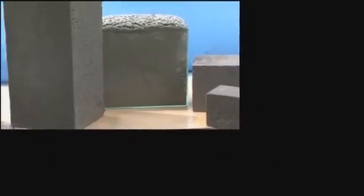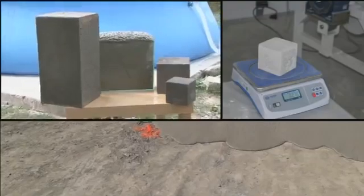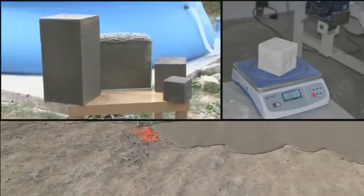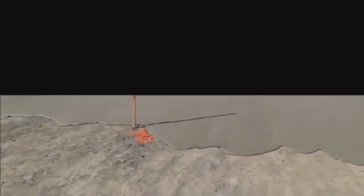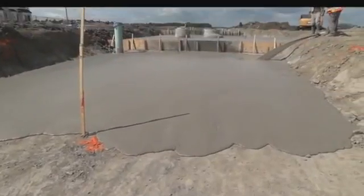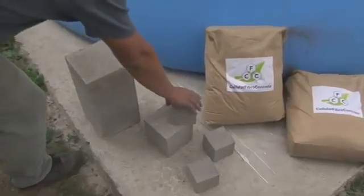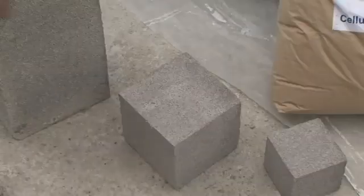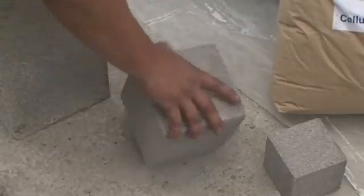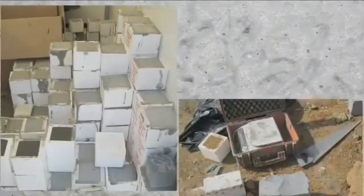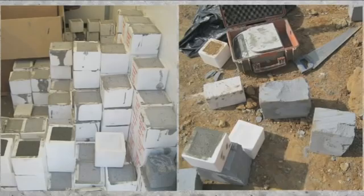Compared with traditional concrete, cellular or porous concrete is considerably lighter. Typical heavy concrete has a density of 2,400 kg per cubic meter, while cellular concrete can be made with various densities, from 250 to 1,400 kg per cubic meter.